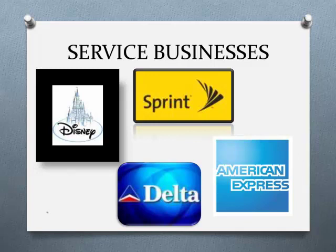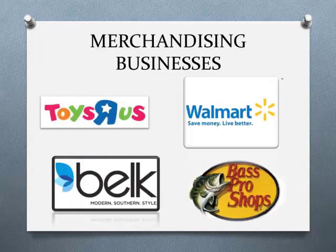eBay is also worth mentioning — it provides the auction service; they don't provide the merchandise. So eBay is in fact a service business. Merchandising businesses buy products and then resell them without changing them much. Belk, Walmart, and Toys R Us buy from manufacturers, put the products in their stores, mark up the price, and sell to customers. These businesses basically buy wholesale and sell at retail.